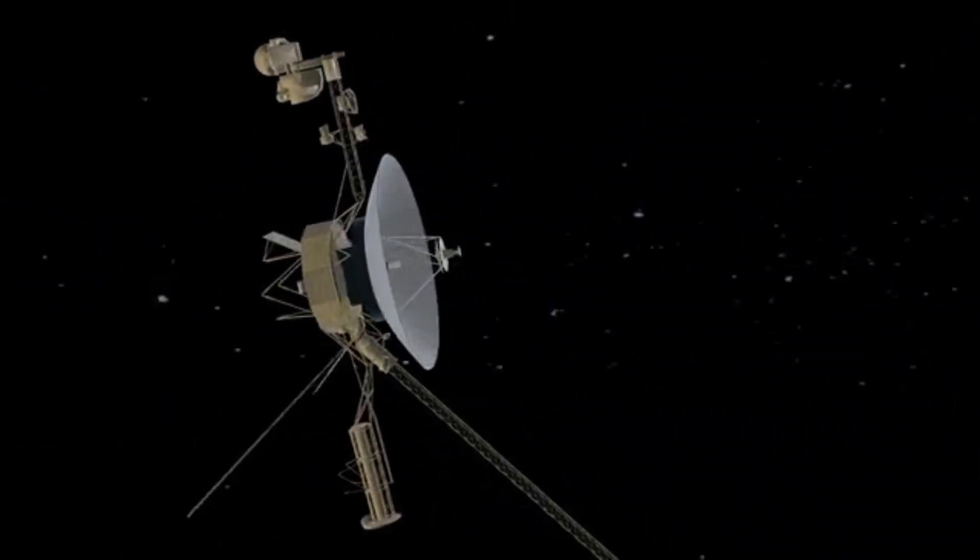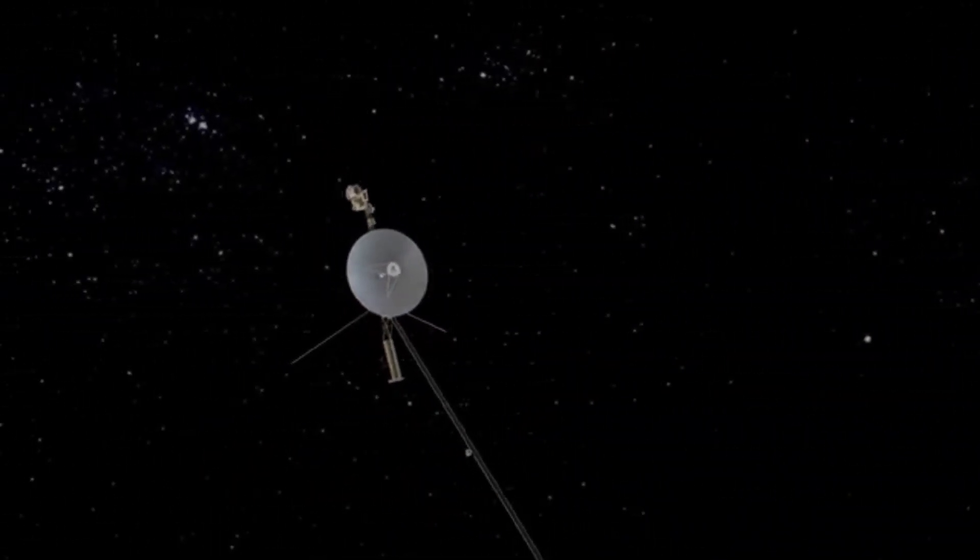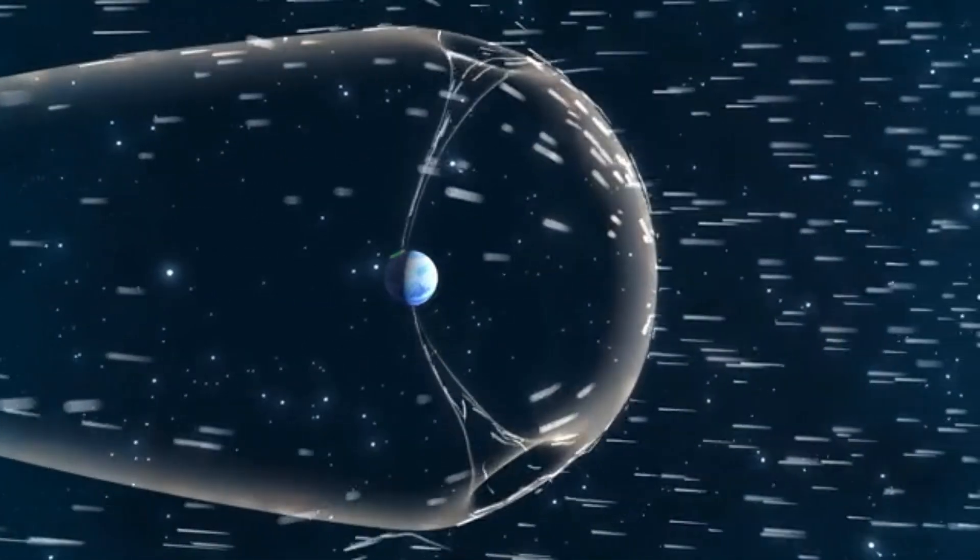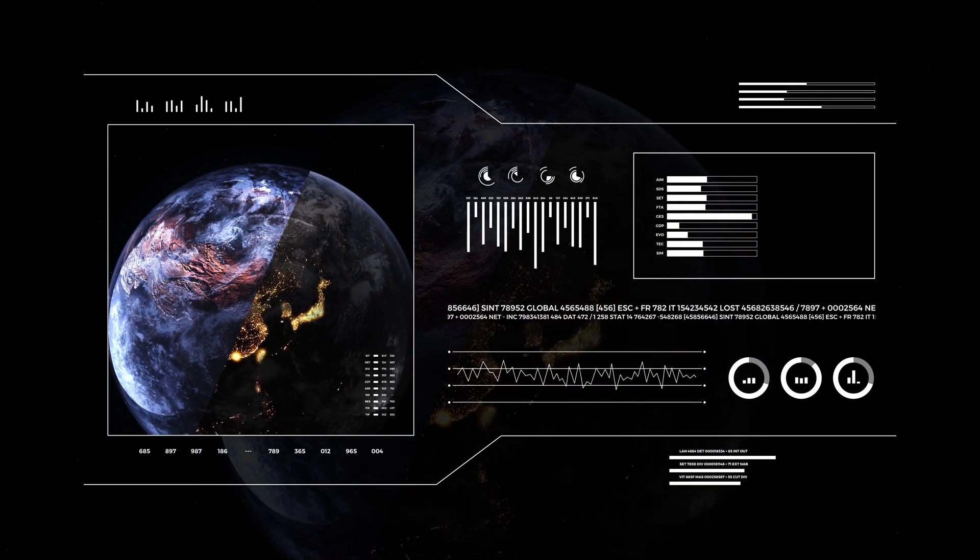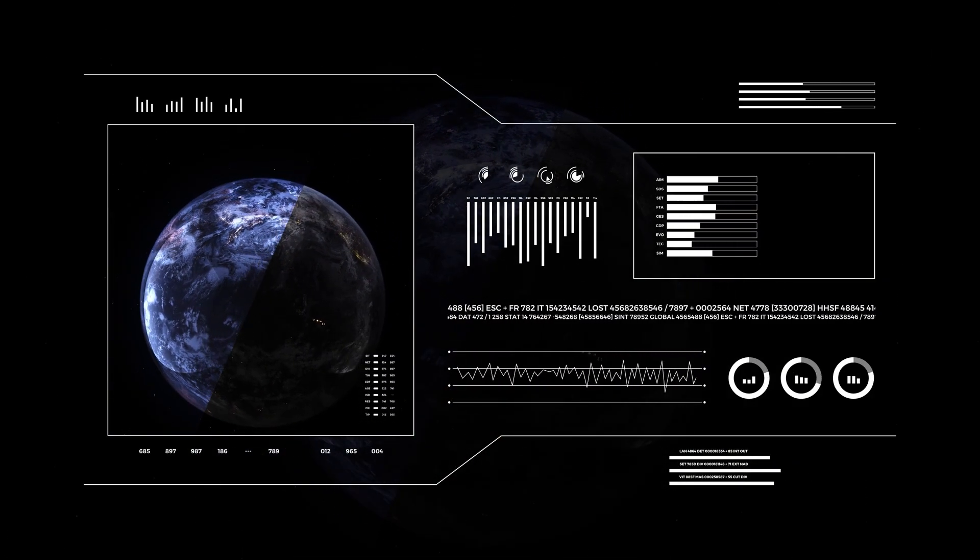Launched in 1977, Voyager 2 has now traveled more than 12 billion miles from Earth. It has crossed the boundary of the Sun, its protective bubble called the heliosphere, and entered interstellar space. For the first time, we have direct data from beyond this frontier. NASA calls it a new chapter in space science.